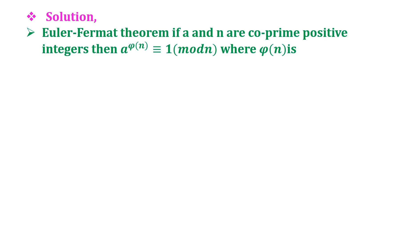This question is based on Euler-Fermat theorem. The Euler-Fermat theorem says that if a and n are co-prime positive integers, then a raised to phi of n is congruent to 1 mod n, where phi of n is Euler's function.